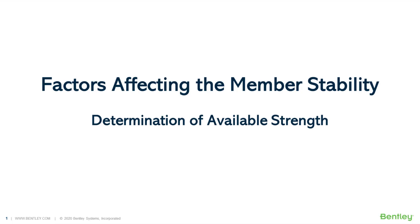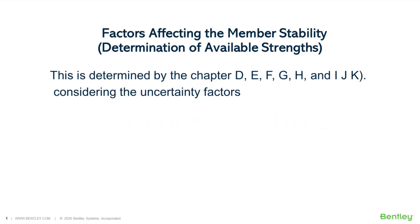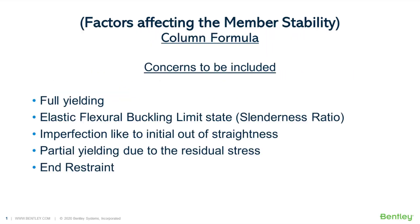The factors affecting member stability are considered in determination of the available strength. The available strength is determined by Chapters D through K, whichever is applicable, considering uncertainty factors like phi and omega. The column curve has been developed incorporating these factors: yield limit, buckling limit state based on length, imperfection due to initial out-of-straightness, partial yielding accentuated by residual stress, and end restraint conditions. If the column curve equation includes all these considerations, it guarantees proper determination of member stability and available strength limit state.